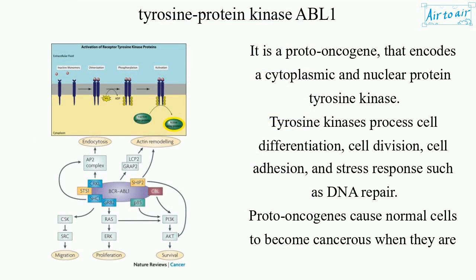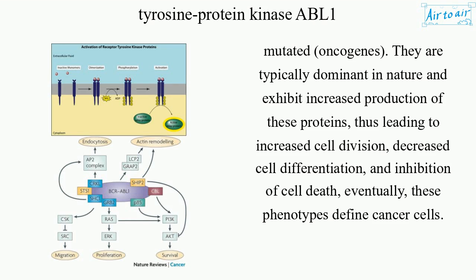It is a proto-oncogene that encodes a cytoplasmic and nuclear protein tyrosine kinase. Tyrosine kinase regulates cell differentiation, cell division, cell adhesion, and stress response such as DNA repair. Proto-oncogenes cause normal cells to become cancerous when mutated into oncogenes. They are typically dominant in nature and exhibit increased production of these proteins, thus leading to increased cell division, decreased cell differentiation, and inhibition of cell death. Eventually, these phenotypes define cancer cells.